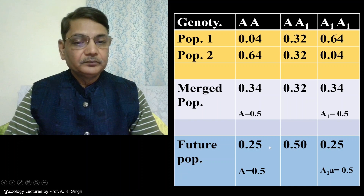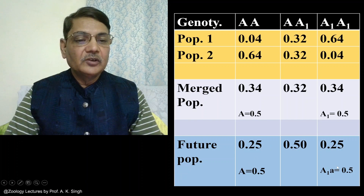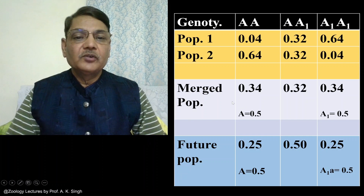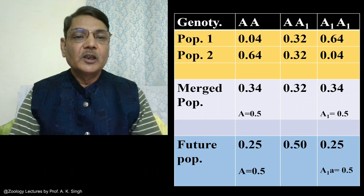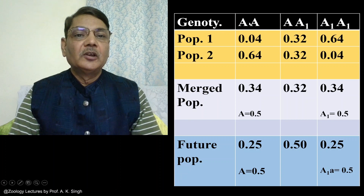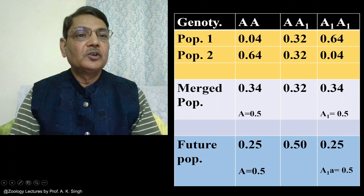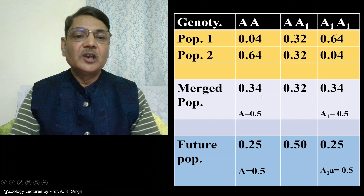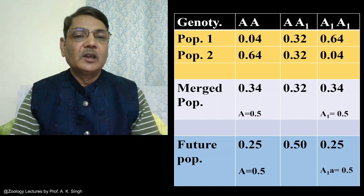When you calculate the allele frequencies for A and A1, they will come to 0.5 and 0.5. This way you can understand that if two populations equal in size are merged together, what would be the fate of the three genotypes for a specific gene locus. Based on the frequency of these three genotypes you can calculate the allele frequency for the merged population, and if such a population is in Hardy-Weinberg equilibrium then the future genotype and allele frequencies can also be computed.